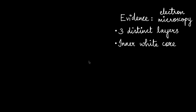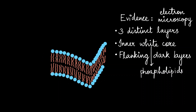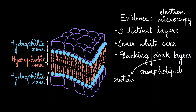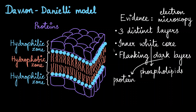A few years later, based on electron microscopy evidence, it was found that there are actually three layers within the lipid bilayer. In electron micrographs, they appear as an inner white core surrounded by two dark regions. The white core represents the phospholipids, and the dark layers represent proteins present above and below the lipid bilayer. The tail of the phospholipid created hydrophobic zones, surrounded by two hydrophilic zones above and below. This model was called the Davson-Danielli model. However, it had one problem: it could not explain cell membrane transport — how molecules cross through the membrane into and out of the cell.